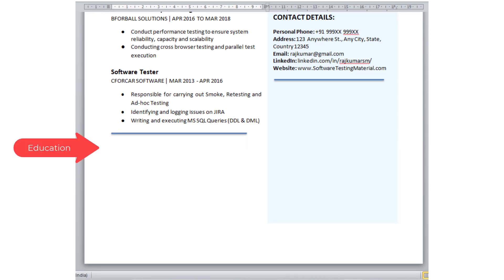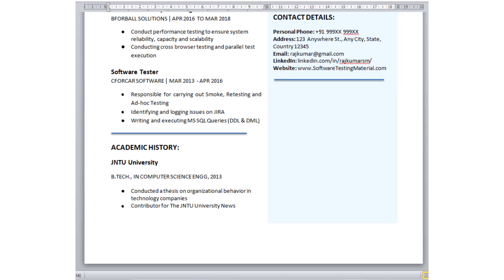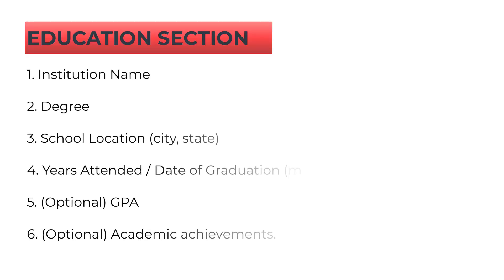The next section is the education section. List your education in reverse chronological order, same as your work experience — list your highest degree first. This section contains: institution name — mention high school only if that's the highest level of education you have achieved, otherwise skip your high school details — the name of the degree, the location of your school, years attended, and date of graduation in month and year format. GPA is optional; include it only if it is above 3.5. Academic achievements are also optional — any interesting papers you have written, for example.